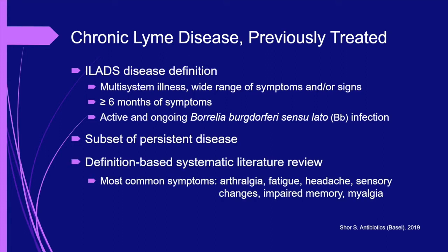However, after presenting its disease definition, the ILADS paper details the results from its systematic review of the literature. That review identified cases meeting the criteria for chronic Lyme disease previously treated and documented the symptoms associated with those infections. Interestingly, the six most commonly reported symptoms—arthralgia, fatigue, headache, sensory changes, impaired memory, and myalgia—were included in the symptom list we discussed in the previous two slides.